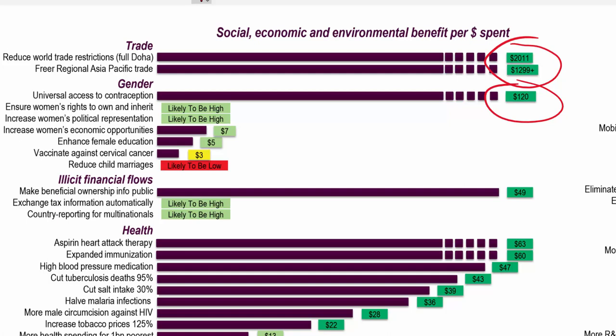Some things might be the right thing to do morally but aren't necessarily a good monetary investment. For example, spending money to campaign against child marriages worldwide might be morally correct, but in terms of payoff on investment, it's not going to be a good bet. Not everything we do has to have a monetary payoff — we're just calculating scientifically for each dollar invested what the likely payback will be.